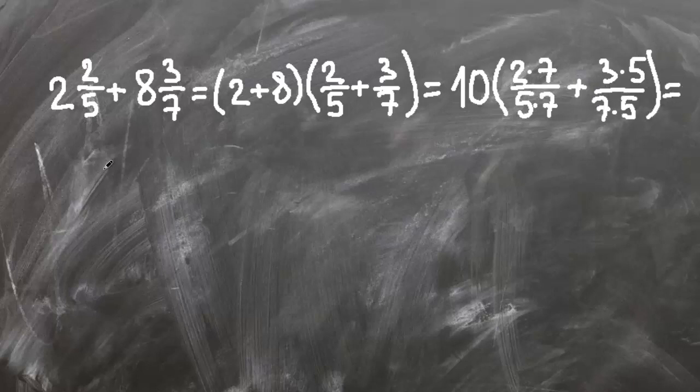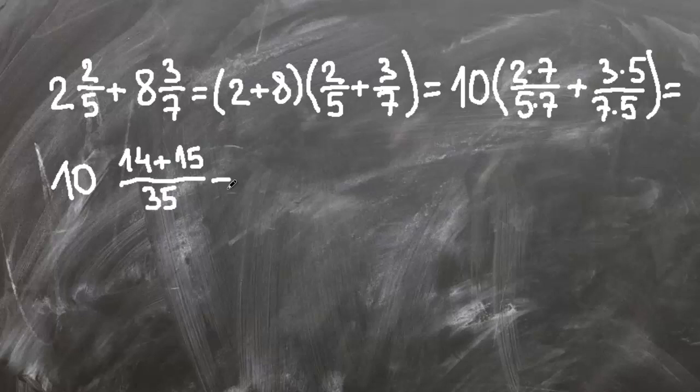This equals to ten and fourteen plus fifteen over thirty five. And this is ten and twenty nine over thirty five.